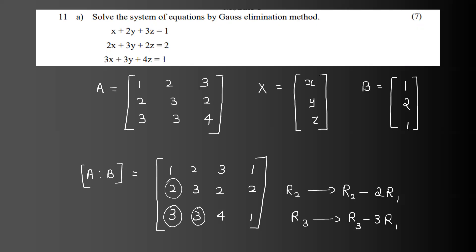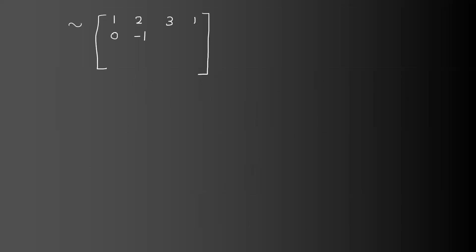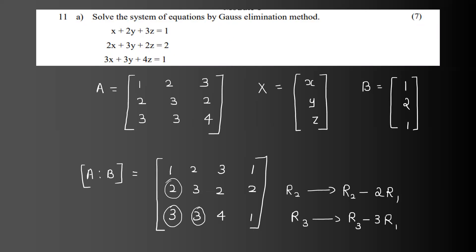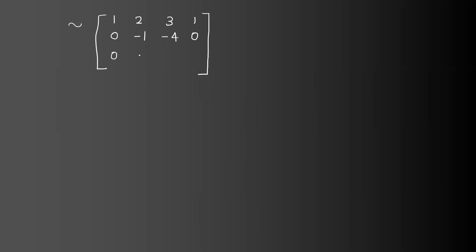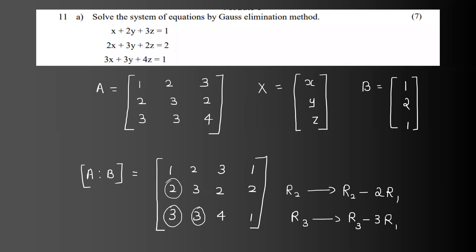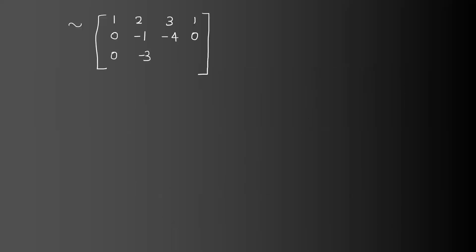The computed values are: 2 minus 6 is minus 4, 2 minus 2 is 0. Then 3 minus 3 is 0, 3 minus 6 is minus 3, 0, minus 3, minus 6, minus 3. And 4 minus 9 is minus 5, 1 minus 3 is minus 2. So the new entries are minus 5 and minus 2.